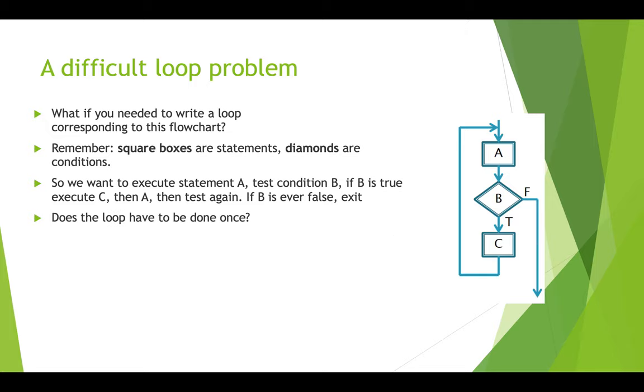Does this loop have to be done once? That's one of the questions that we ask when we're choosing loops. And it's kind of a half and half. A needs to be done at least once, but C may not need to be done at all if the condition B is not true. So how do you write this in code? There's a bunch of different ways, and we're going to look through them.